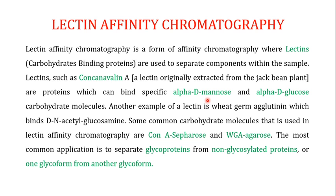Once a protein is made, it undergoes post-translational modification. One important post-translational modification is glycosylation, where carbohydrate moieties — such as alpha-D-mannose or alpha-D-glucose — are added to proteins. Glycoproteins carrying alpha-D-mannose or alpha-D-glucose can be purified from a mixture of proteins using Concanavalin A as a ligand attached to a solid support.